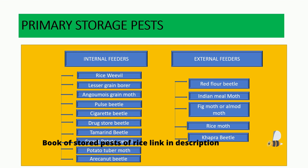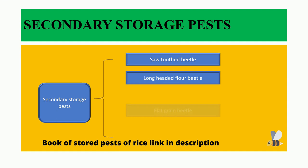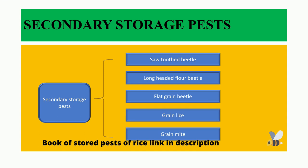These are the primary storage pests of rice. Now let us see about the secondary storage pests of rice. Secondary storage pests include: sawtooth grain beetle, long-headed flour beetle, flat grain beetle, grain weevil, and grain mite. In an upcoming video, we will be discussing these pests in detail.